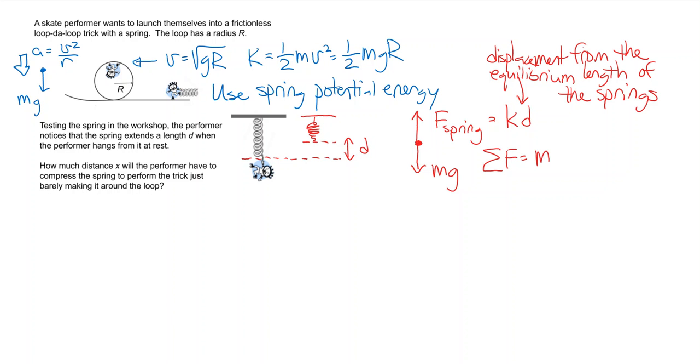So that means if they're just hanging, the sum of the forces is mg minus kd, which is zero, and so k is mg over d. So that's the strength of the spring, the spring constant. A manufacturer might print that number in newtons per meter on the spring, but this person found it experimentally.